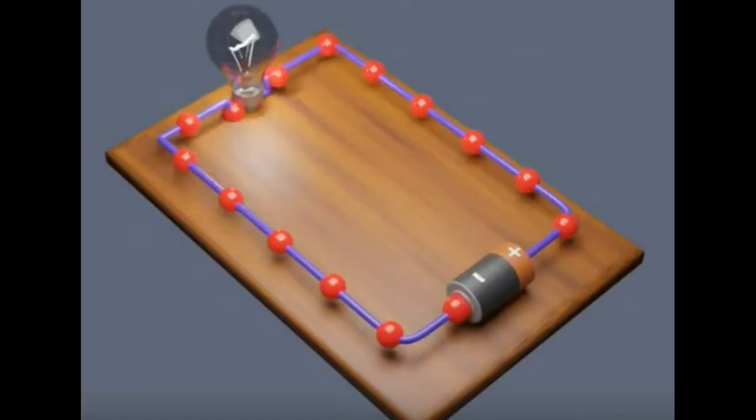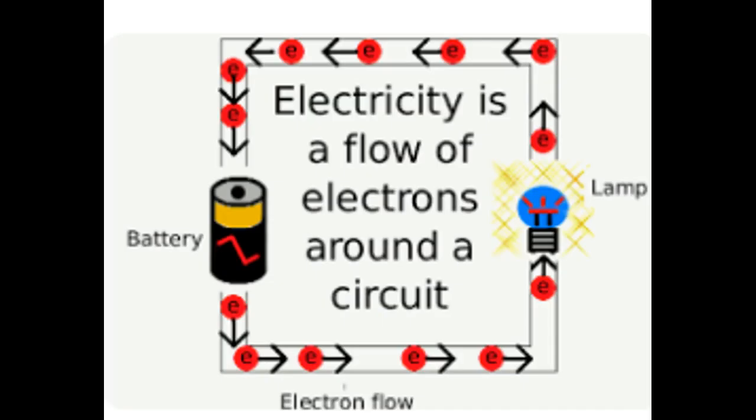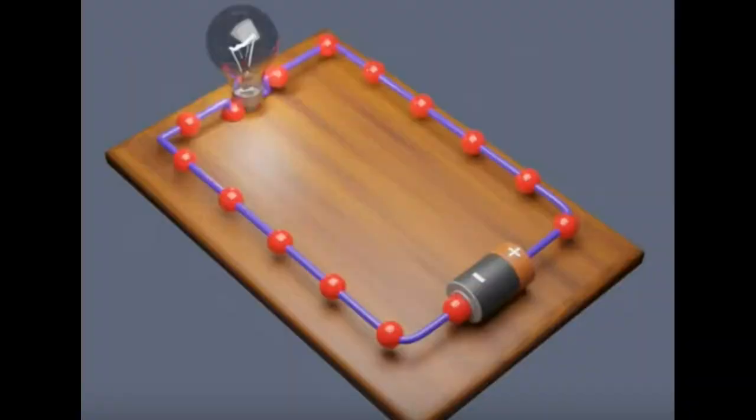Electric current is the number of electrons passing a given point in one second. A current is an electrical flow caused when electrons move through a conductor and carry electrical energy from one place to another place.